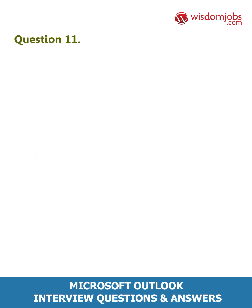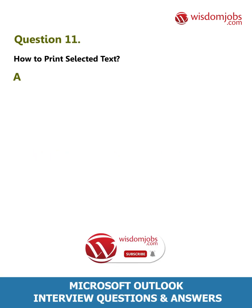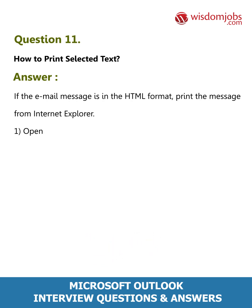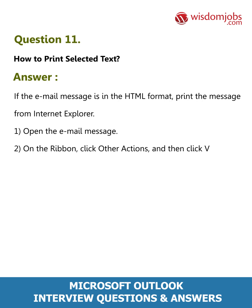Question 11: How to print selected text. Answer: If the email messages are in HTML format, print the message from Internet Explorer. Open the email message, then on the ribbon click 'Other Actions' and then click 'View in Browser'.